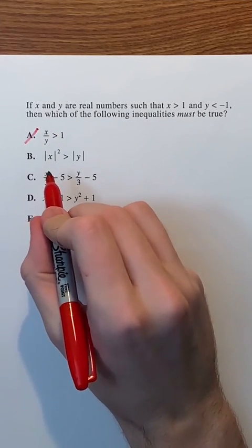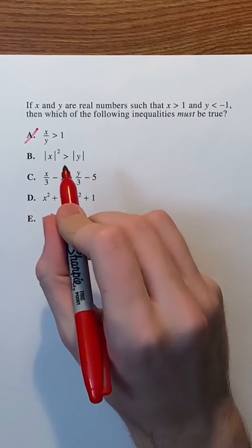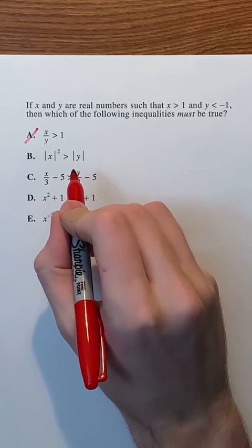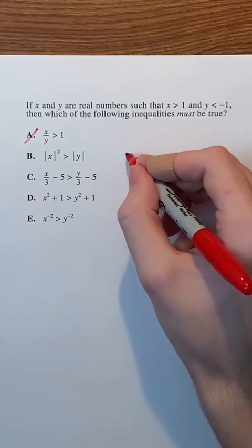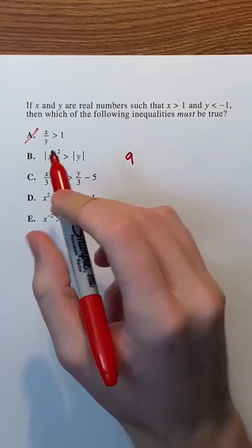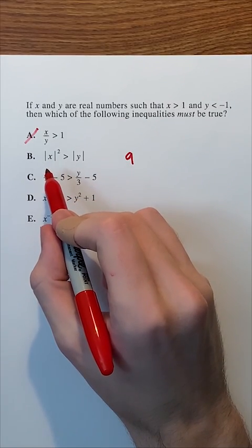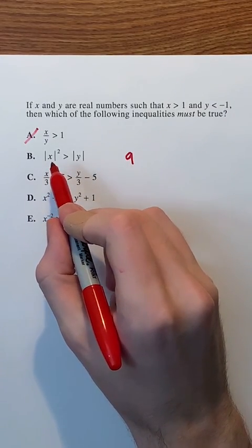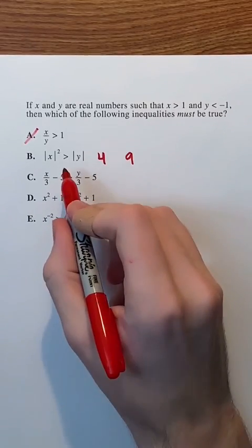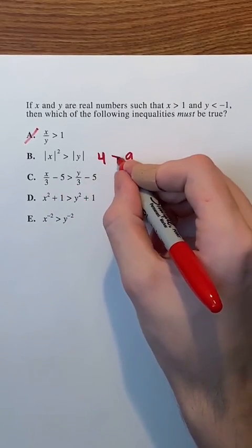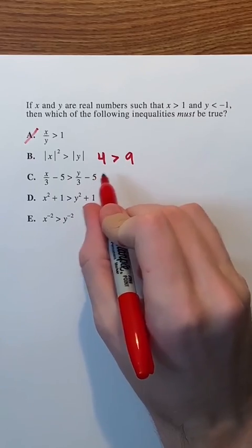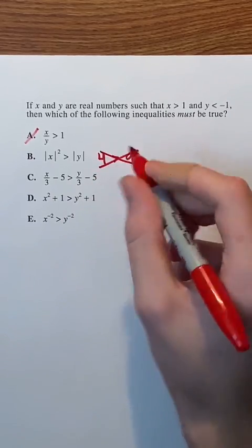In B, we just need to look at an example. Let's say that y is negative 9, which is less than negative 1, and the absolute value of negative 9 is just 9. Let's have x be 2, which is greater than 1. The absolute value of 2 is just 2, and 2 squared is 4. Then, we can just bring the greater than symbol over, and we end up with a statement that's false. 4 is not greater than 9, so B is incorrect.